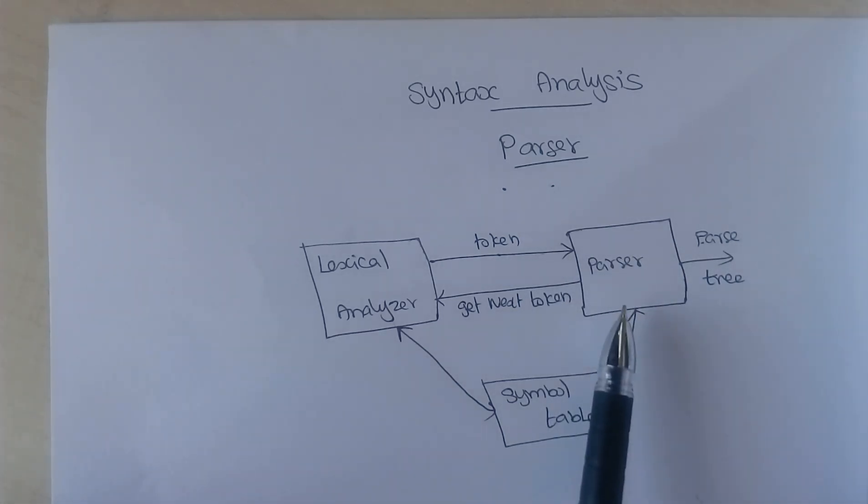So the main motto of this parser is to check the syntactic structure of the code. Whatever might be the input, it checks the syntactic structure and generates a parse tree. If the given input code is free of any syntactic error, it will generate a parse tree. And the symbol table is the data structure that is accompanied with both lexical analyzer and parser.